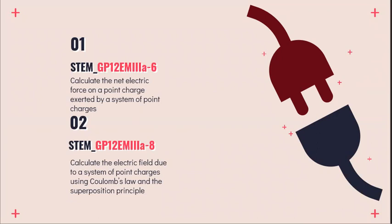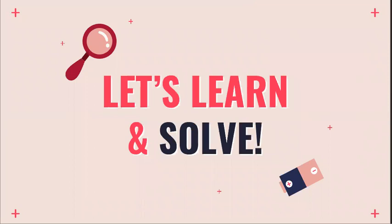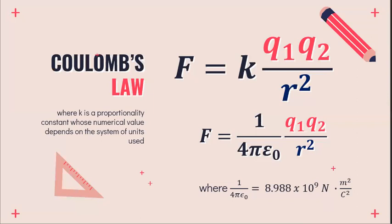Before we start with our mathematical computation, let us recall some formulas from our previous lecture. Let's start with Coulomb's law. Coulomb's law measures the force reaction between charges or between point charges. It finds the electric force due to point charges and is mathematically equal to K, which is our Coulomb's constant, multiplied by the product of two charges divided by the distance squared.